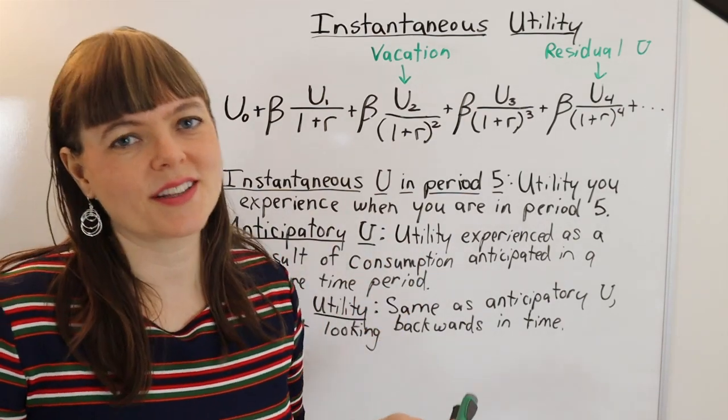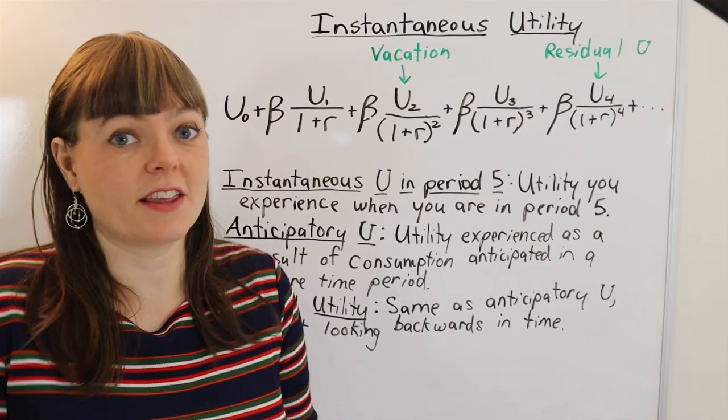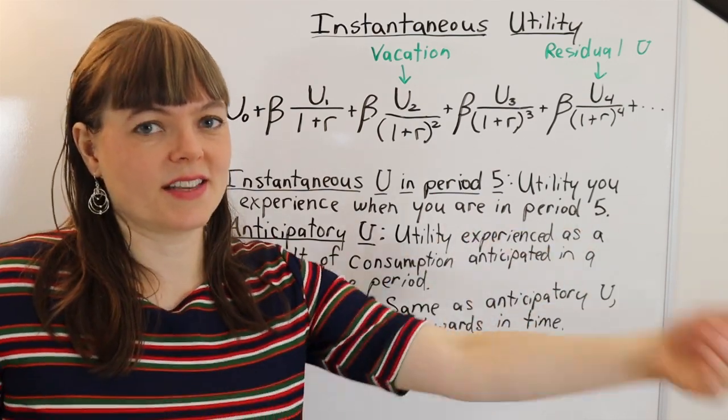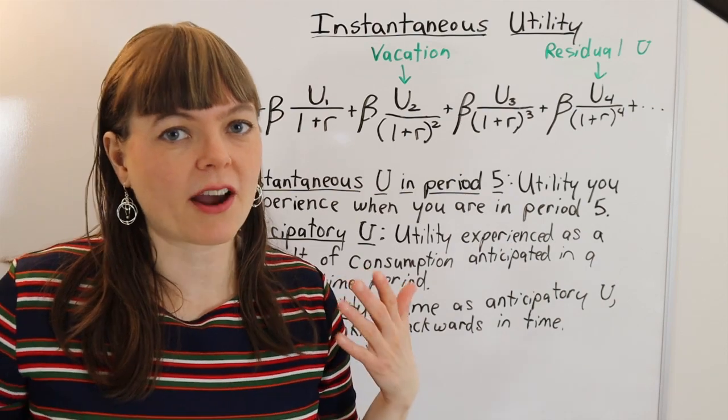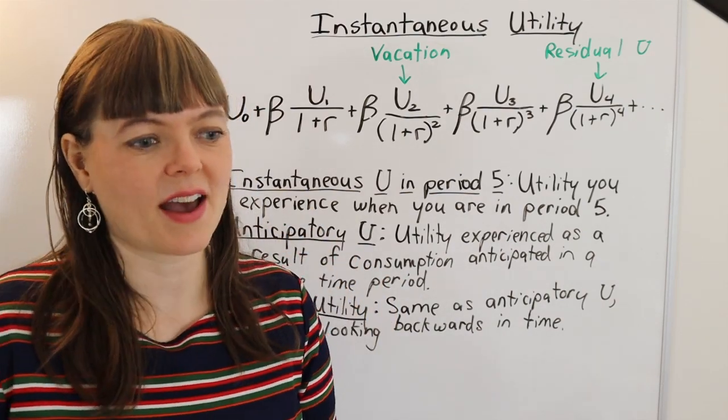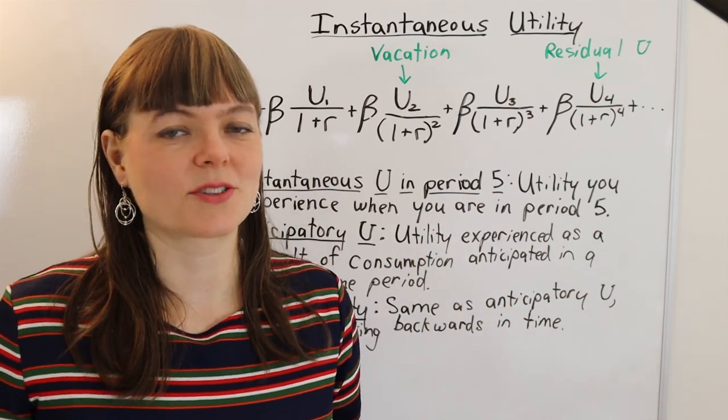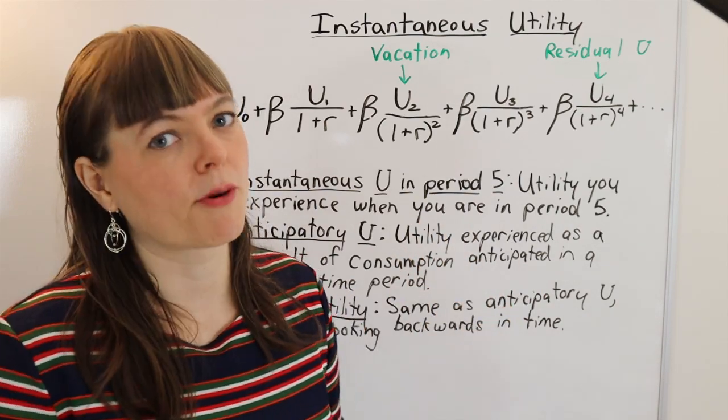So instantaneous utility is a super useful concept if you want to think about the fact that you really do get utility from anticipating things and from looking back on things. Our brains don't just exist in the moment and that has real value. And accounting for that when we're modeling things is going to improve the accuracy of our models.